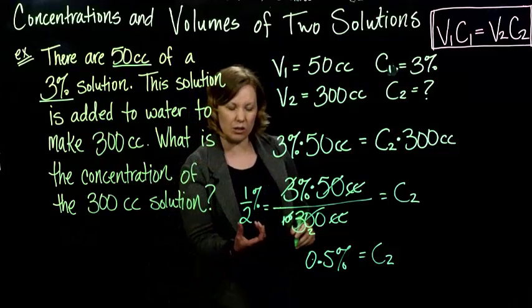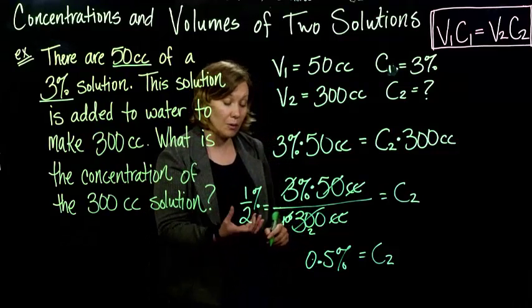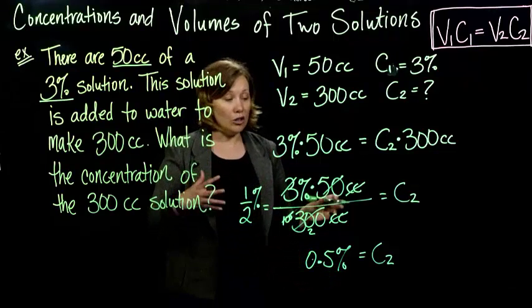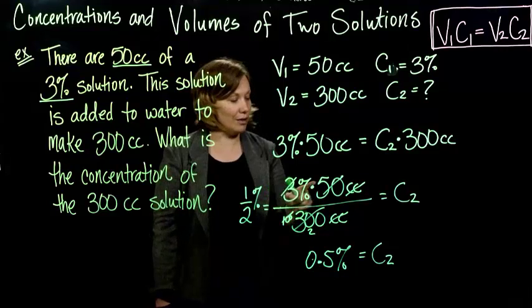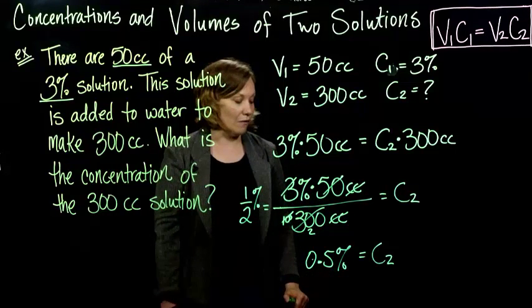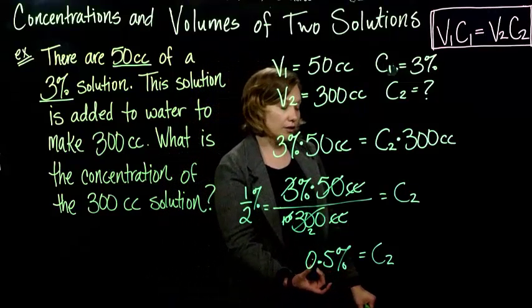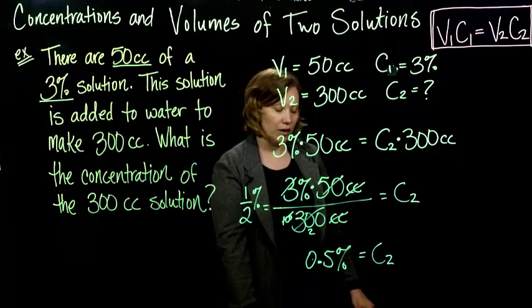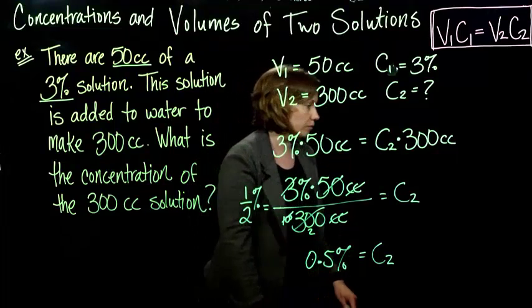And usually we don't write a percent as a fraction. We would write a decimal, so I just switched the one half to 0.5. Alternately, you could have put this in your calculator. 3 times 50 divided by 300, if you put that in your calculator, will give you 0.5. Okay, so our new concentration is just a half a percent, so 0.5%.